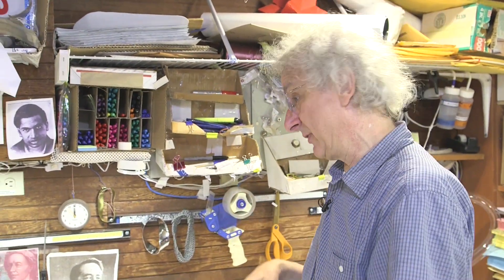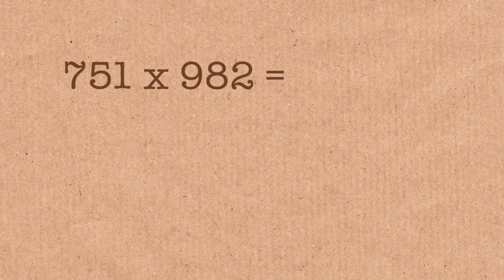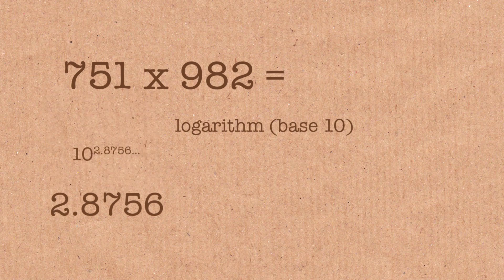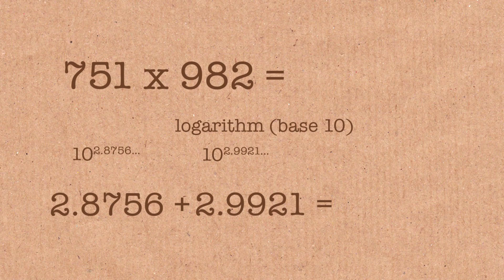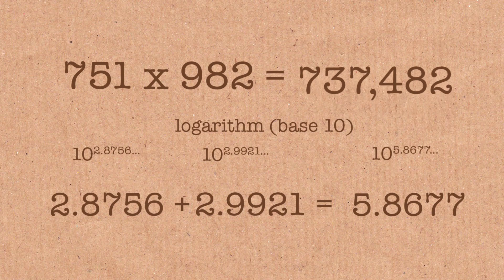Common logs were created so that instead of multiplying big numbers, 751 times 982, what you would do is you would take the logarithm of 751, add it to the logarithm of 982 to get the logarithm of something else, the answer. Look up the antilog of that, the backward log of that, to get the result.